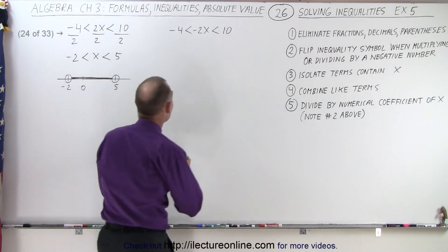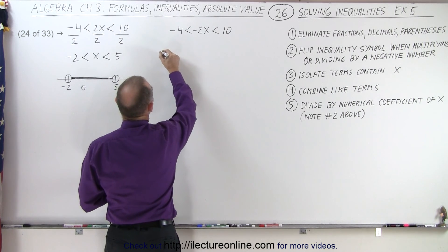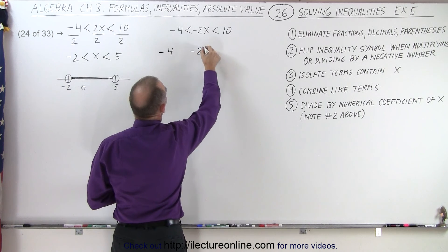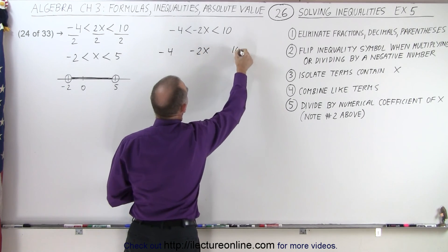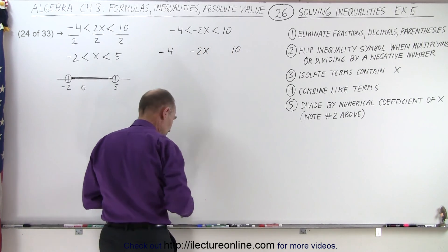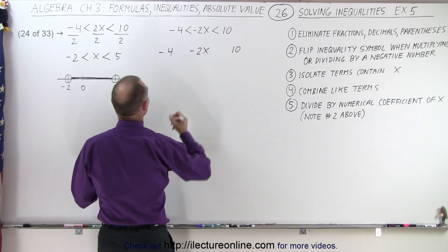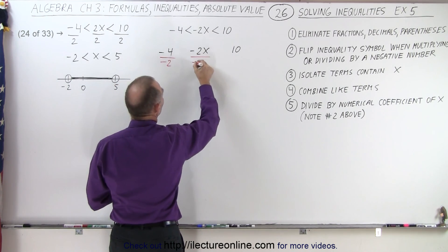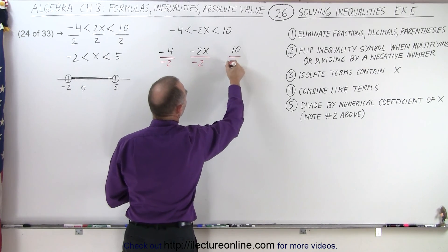So let's rewrite that. So on the left side we end up with negative 4, then we have a negative 2x, and we have a 10. And what we're going to do is we're going to divide the negative 4 by a negative 2, divide the negative 2x by a negative 2, and the 10 by a negative 2.